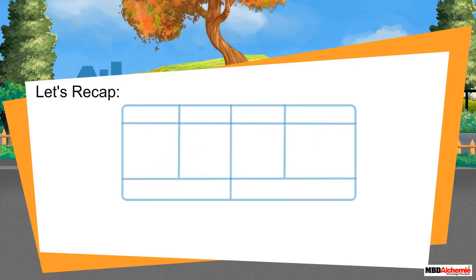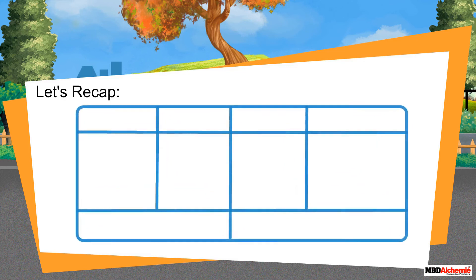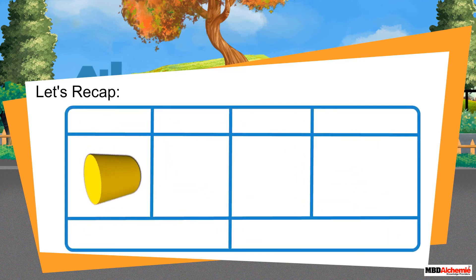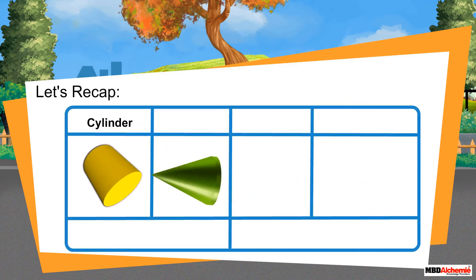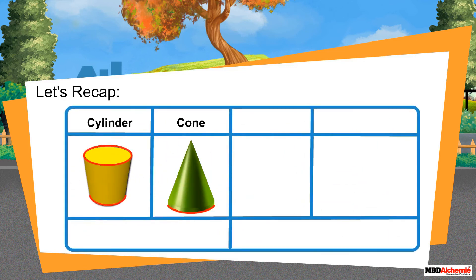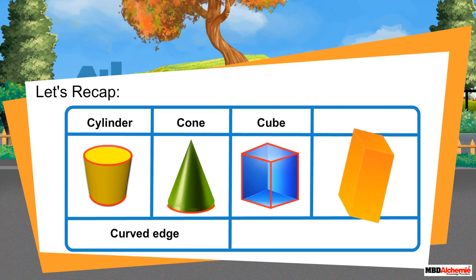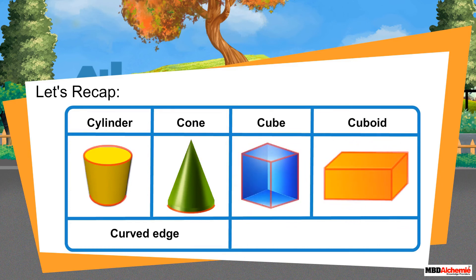Let's recap. Here, we can summarize that a cylinder and a cone have curved edges, whereas a cube and a cuboid have straight edges.